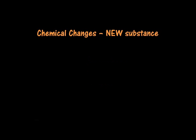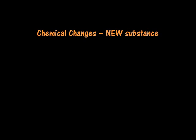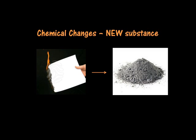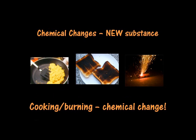Chemical changes are different. In a chemical change, an entirely new substance is created. For example, let's take our paper again. If I burn the paper, it will turn into ash. Ash is a completely different substance than paper, so this is a chemical change — it changed from paper into ashes. Chemical changes form a new substance. Cooking or burning something will always be an example of a chemical change.